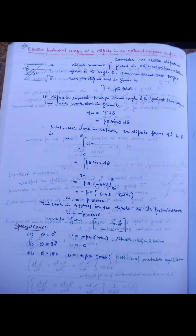Electric potential energy of an electric dipole of dipole moment p⃗ placed in a uniform external electric field E⃗ is equal to −p⃗ · E⃗.